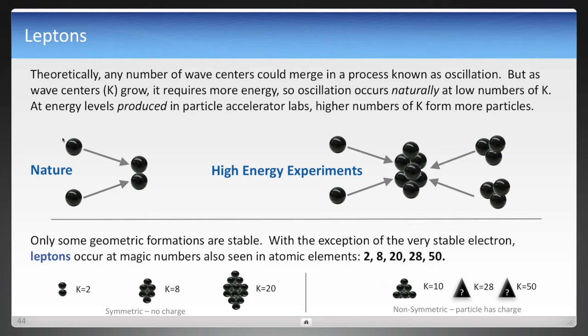But another thing that came about when putting together the longitudinal energy equation is that leptons—and leptons are the neutrino family, there's three neutrinos, and the electron family, there's three electrons—they appear at wave center numbers, or K, at values of 2, 8, 20, 28, 50, with the exception of the electron itself. These numbers, 2, 8, 20, 28, and 50, are the same numbers that are seen as magic numbers in atomic elements. And that means that the most stable elements tend to be the ones at these numbers, or for a combination of protons and neutrons in atomic nucleus. What makes that interesting is that the leptons are the particles that are most often found in nature, and they happen to be at the same numbers, which has to be more than a coincidence.